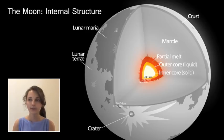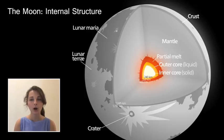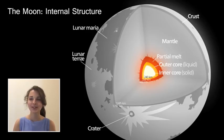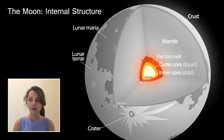The Moon has a differentiated internal structure, a fact that was surprising to many scientists given its size, composition, and distance from the Sun. Many scientists believe that a large impact early in the Moon's history provided the necessary heat for the differentiation and emergence of a plagioclase-rich, or lighter, crust atop a mafic mantle. Moonquakes are caused not by tectonics, but rather by thermal expansions and contractions as the Moon rotates and continues to cool internally, as well as from tidal stresses created by Earth.